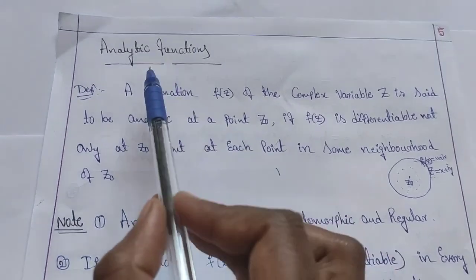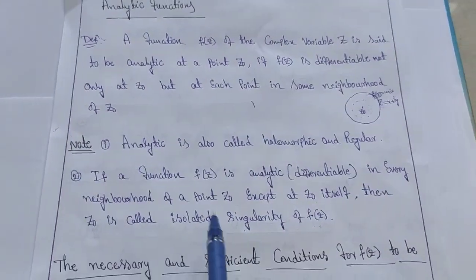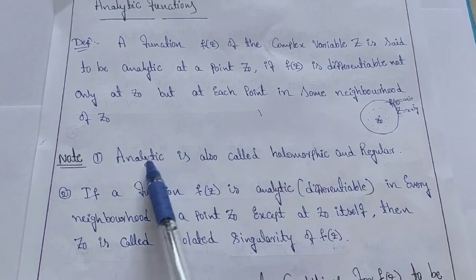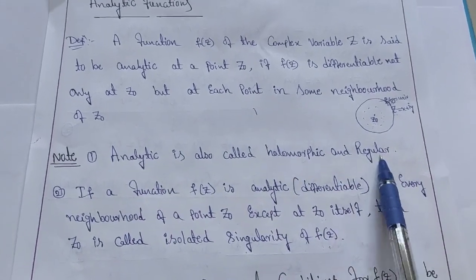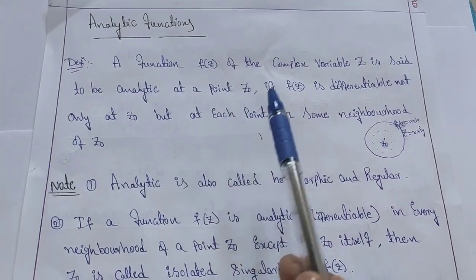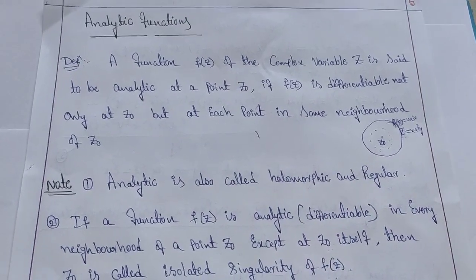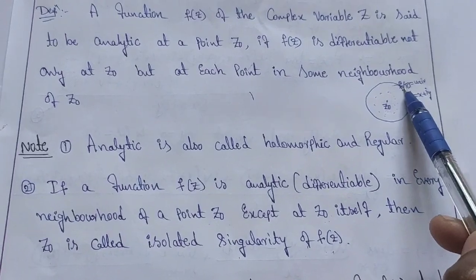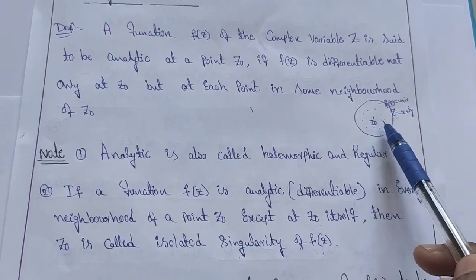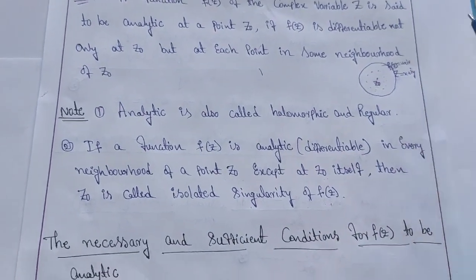We may also call an analytic function holomorphic or regular. Those are the alternative names. The main point here is that analytic means the function should be differentiable at all points including the center point. If the function is differentiable at all points except the center point, then we call that point an isolated singularity.